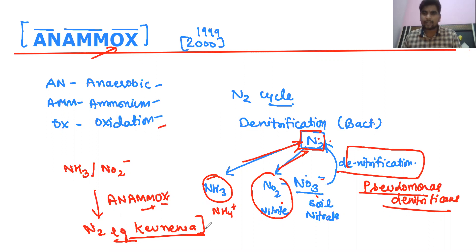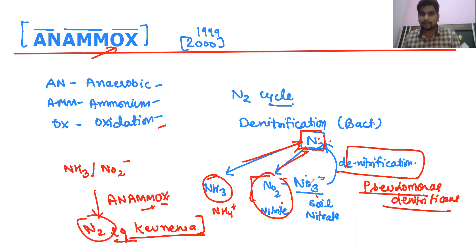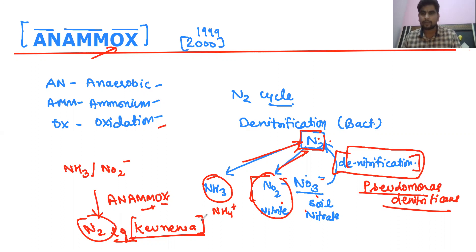Anammox is a natural process in certain environments where nitrite or ammonia changes into dinitrogen, similar to how denitrification converts nitrates to dinitrogen. It occurs naturally in the environment and is also carried out artificially in laboratories using those Anammox bacteria found naturally. In summary, Anammox is the direct conversion of nitrite or ammonia into dinitrogen (N2).